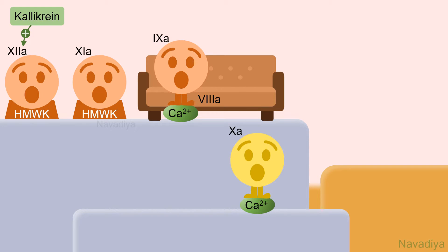Factor 10 is the first member in the common pathway. Now let's see the extrinsic pathway. It is called extrinsic because it starts with factors which lie outside the blood.